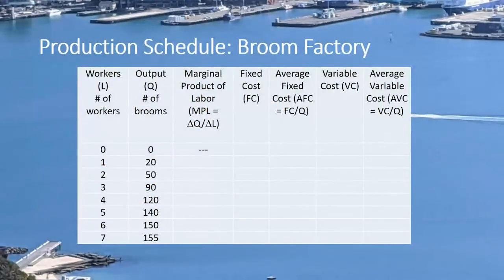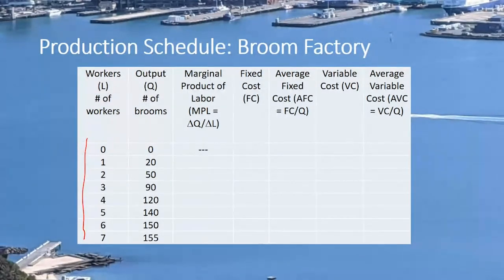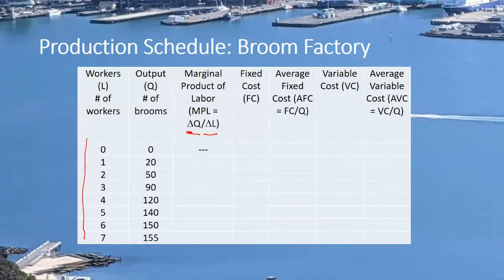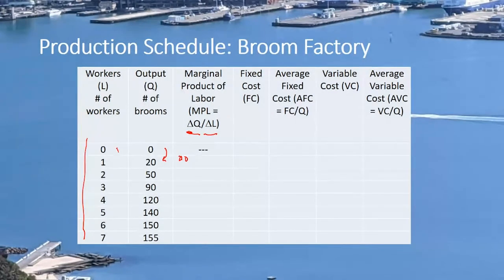Here's the production schedule for the broom factory. We want to calculate the marginal product of labor, given by delta Q divided by delta L — change in Q divided by change in L. Going from zero to one worker, the change in Q is 20 units and the change in L is 1, so 20 divided by 1 equals 20. The marginal product of labor is 20.